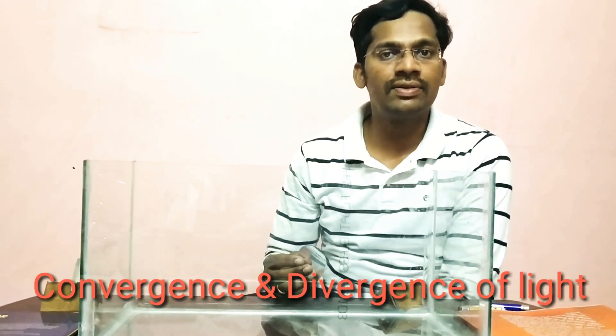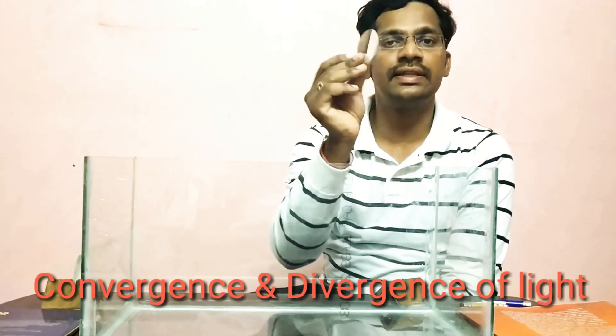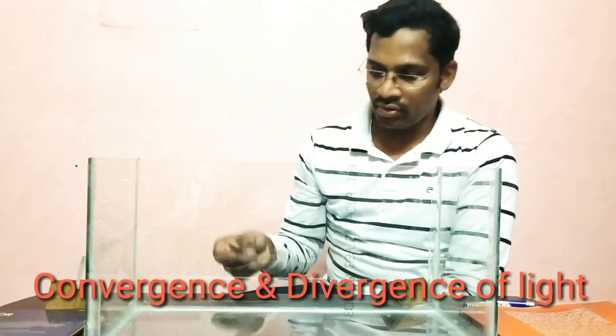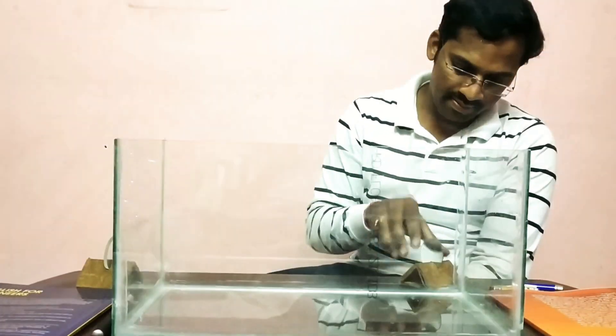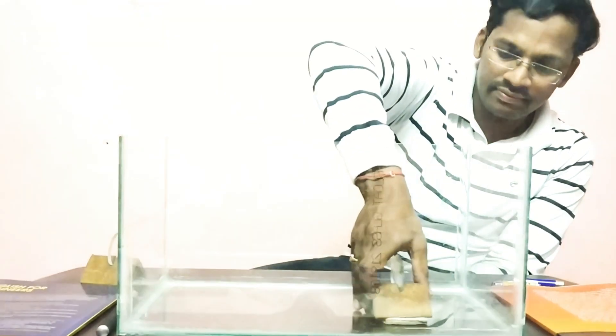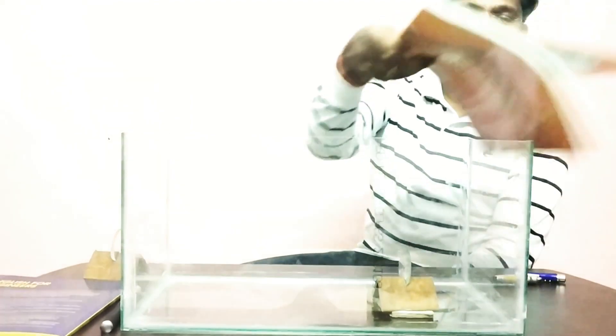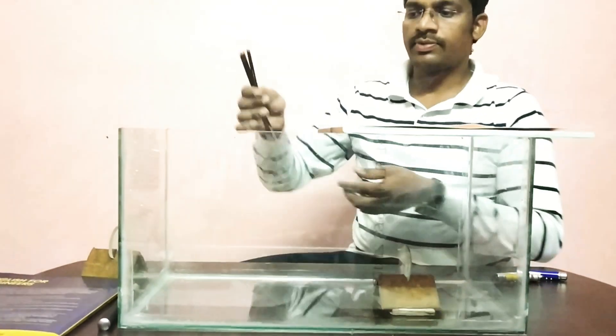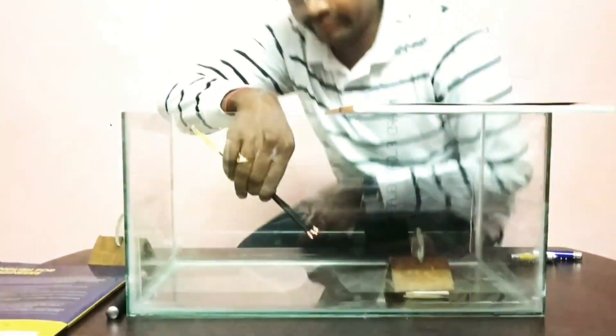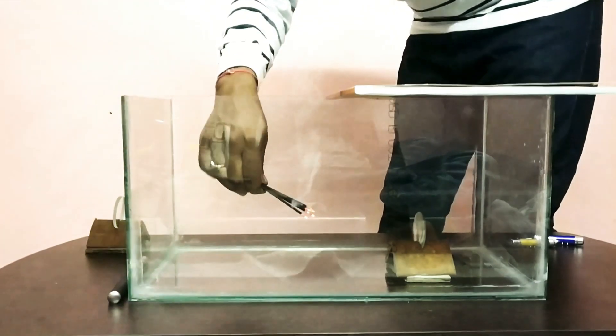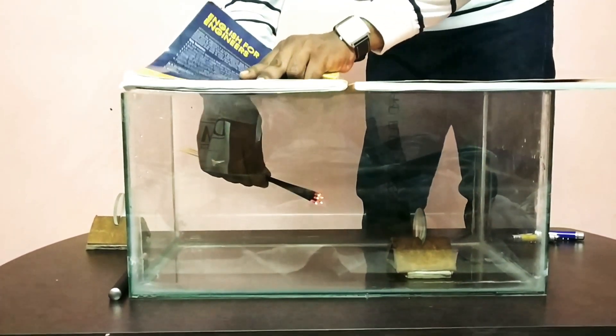Now let us see convergence and divergence of light rays. Here we have taken one convex lens - this is a biconvex lens - and one more lens that is a biconcave lens. Now let us arrange two stands and place them into the fish tank. Now close this and trap some smoke into this. When parallel light rays meet a convex lens, they converge to a point.